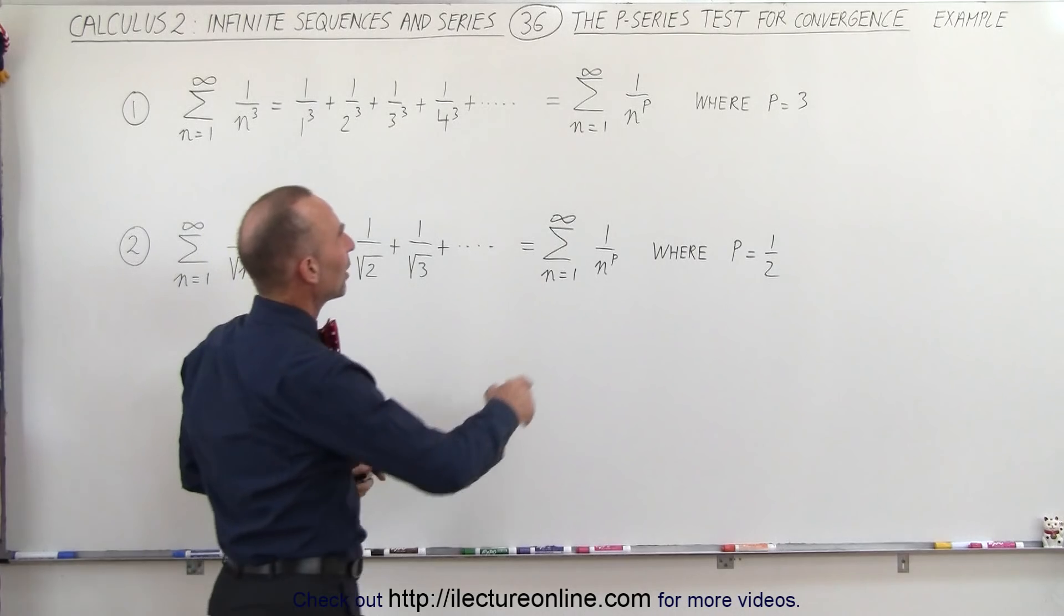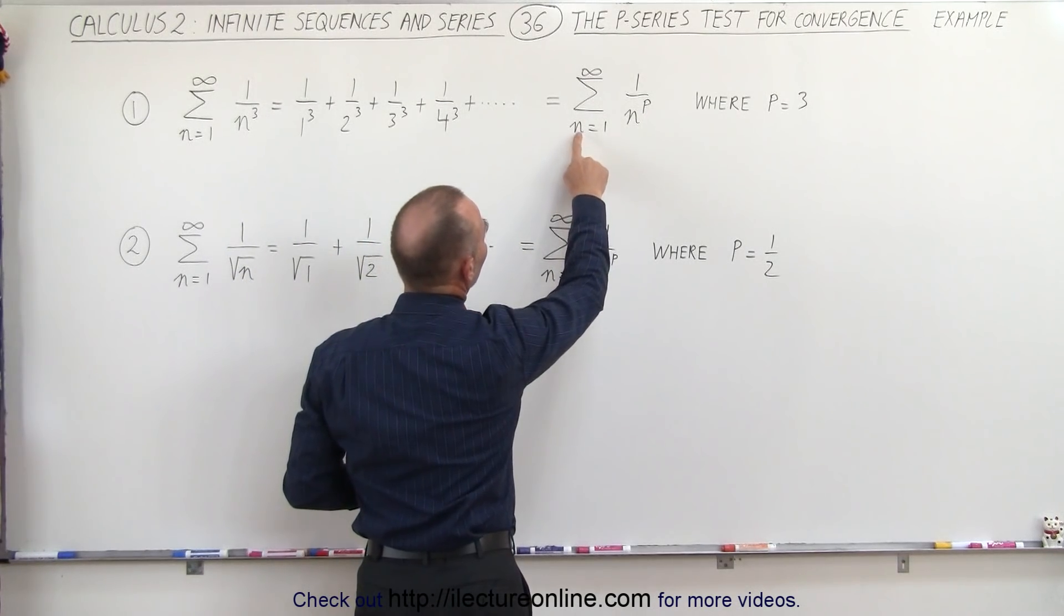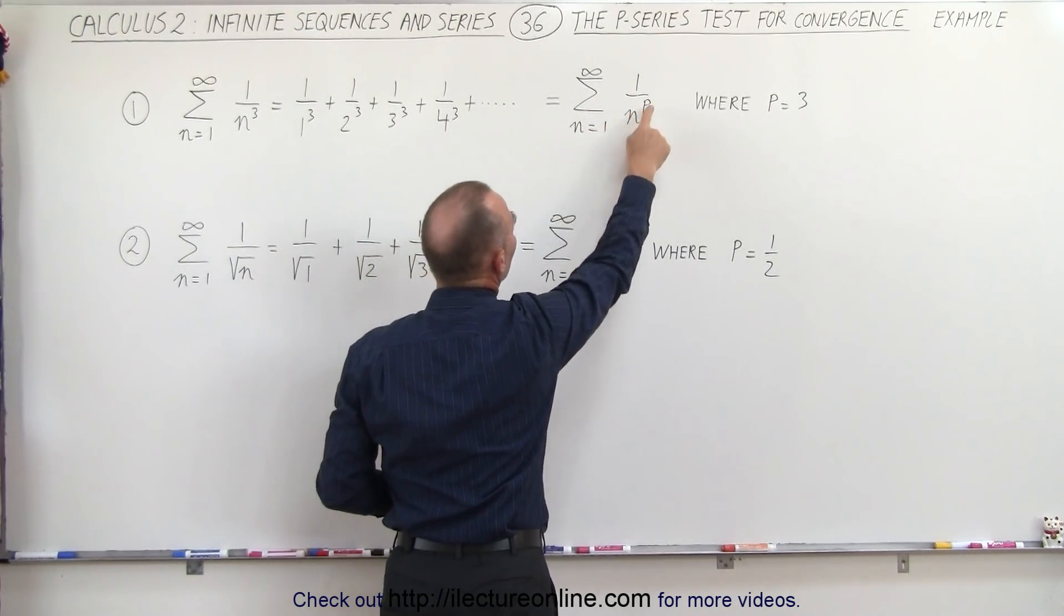The p-series, the general equation of that would be the infinite sum from n equals 1 to infinity of 1 over n to the p power.